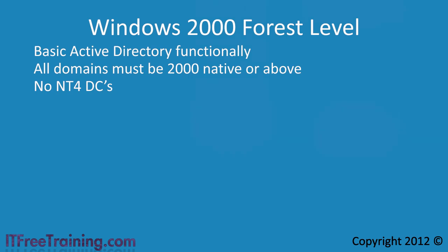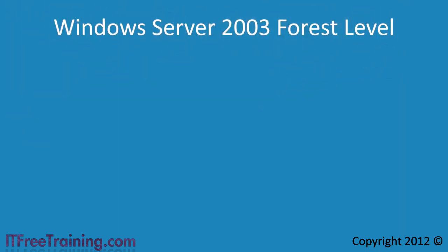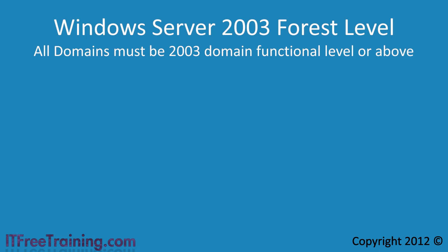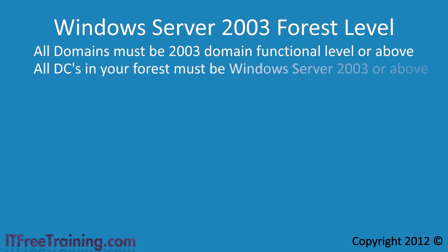The next forest functional level is Windows Server 2003. In order to raise your forest level to Windows Server 2003, all your domains in your forest must be at that domain functional level, which means all of your domain controllers must be Windows Server 2003 or above. Remember that the forest and domain functional levels do not affect which clients can join your domain. Once you raise your forest level, you gain additional features.